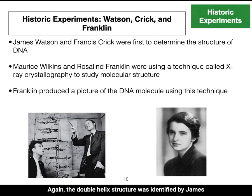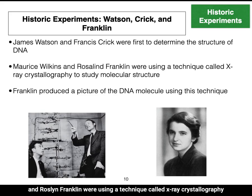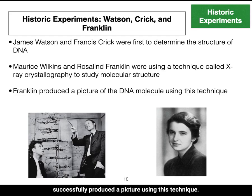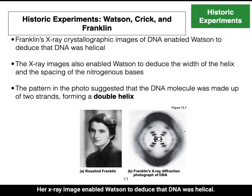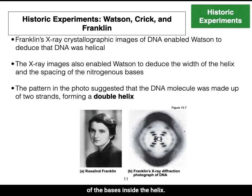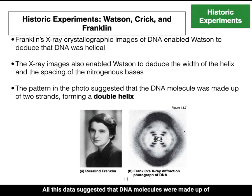The double helix structure was identified by James Watson, Francis Crick, and Rosalind Franklin. At the time, Wilkins and Rosalind Franklin were using a technique called X-ray crystallography to study the molecular structure of DNA. Franklin successfully produced a picture using this technique, and her X-ray image enabled Watson to deduce that DNA was helical. They also determined the width of the helix and the spacing of the bases, suggesting that DNA molecules were made up of two strands forming a double helix.